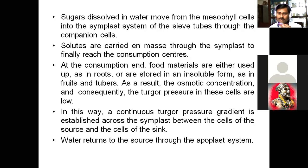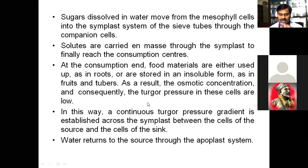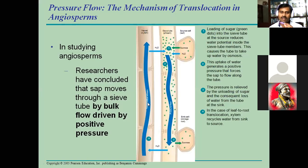Water returns to the source through the apoplast system. Food is moving by the symplast way and water is returning by the apoplast way. Apoplast means outside of the plasma membrane, through the cell wall. Water moves between cell wall to cell wall because the cell wall is permeable. Both these pathways — apoplast way and symplast way — run parallelly.